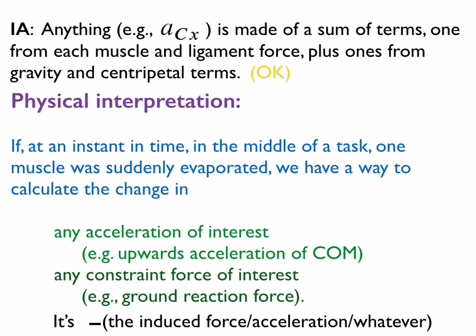What's the physical interpretation? Imagine a person is doing something and, in the middle of doing it — in some configuration at some time — you suddenly zap one of their muscles and make the force in that muscle zero. The question is: how does some acceleration of interest, say the acceleration of the center of mass, or a constraint force of interest like the force of the ground on the foot, change? It's just this induced acceleration term or induced force term.